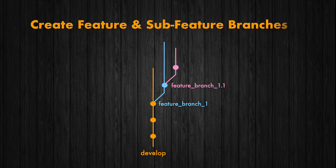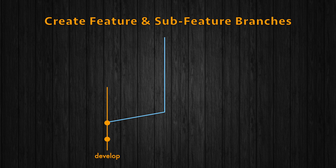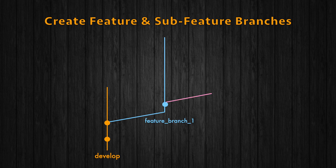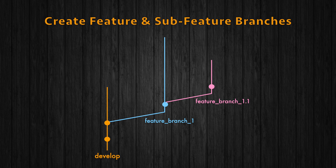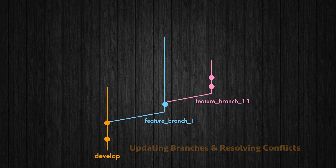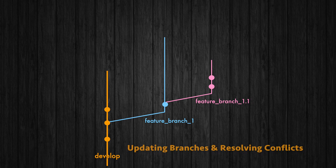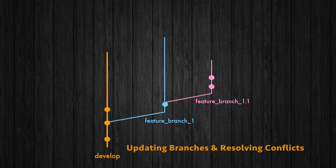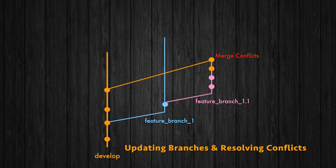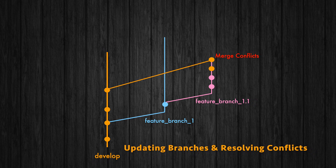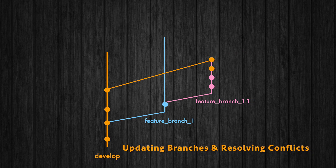Initial setup — create feature and sub-feature branches: you create FeatureBranch1 from develop, then create a sub-feature branch FeatureBranch101 from FeatureBranch1 and work on it. As development progresses, you synchronize FeatureBranch101 with the latest changes from develop. You merge develop into FeatureBranch101 locally, encounter merge conflicts, resolve them in your code editor, and push the updated branch to the remote repository.